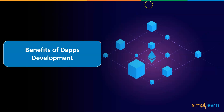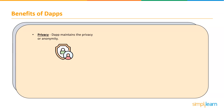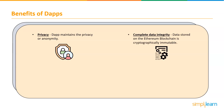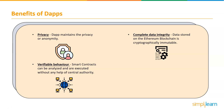Let's have a look at the benefits of DApps. First is privacy — DApps maintain the privacy or anonymity of the user, which means you don't need to provide any kind of personal information to deploy or interact with the DApps. Second is complete data integrity — data stored on the Ethereum blockchain is immutable due to cryptographic primitives. No one can forge or manipulate transactions or other data stored in the blockchain network. Third is verifiable behavior — smart contracts can be analyzed and are bound to execute in directed ways; it doesn't need to trust any central authority.